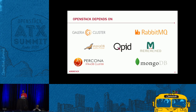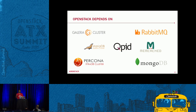OpenStack uses a messaging service as well — RabbitMQ or Qpid. Different services in OpenStack talk to one another, so you need a way to cast and call — send messages back and forth to make sure some of those messages get received, and sometimes it's just 'send this message and I don't care if it gets received.' It also depends on Memcache in certain instances as well as MongoDB for certain services.